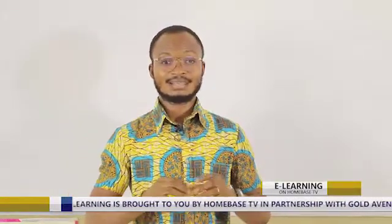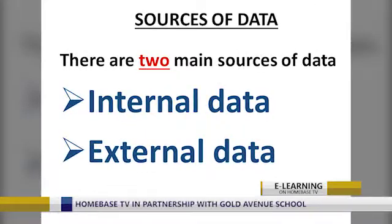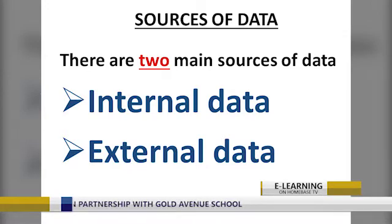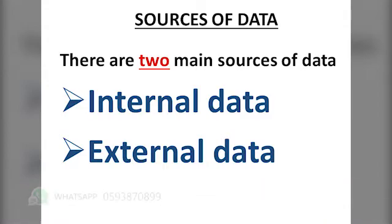It has not been blended together to get your final mixed fruit juice. There are so many sources of data, but basically we will focus on the main sources. We have only two major sources of data. The first one is the internal data source and the second one is the external data source. We will go through them one by one so that we can understand very well.